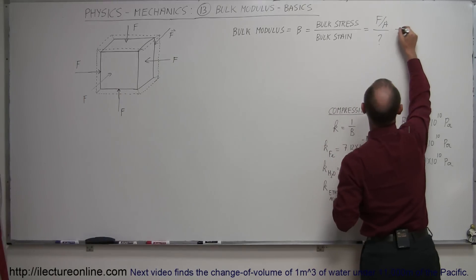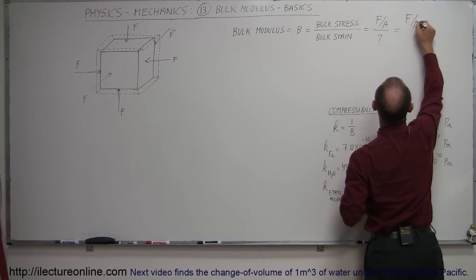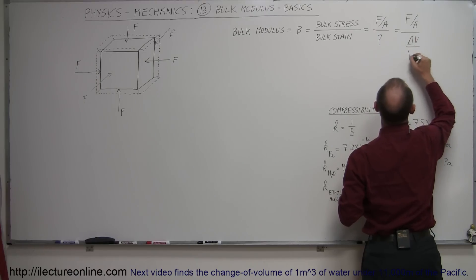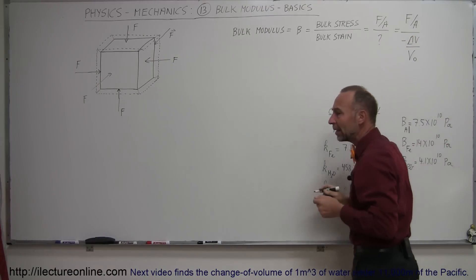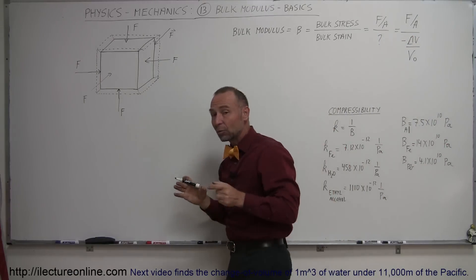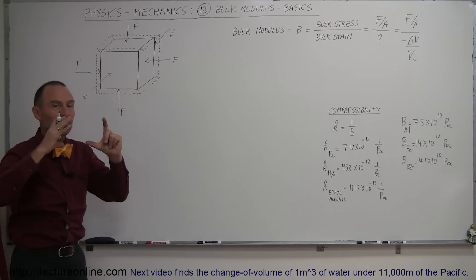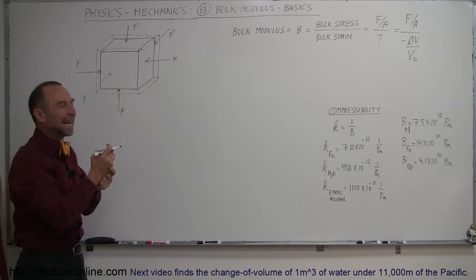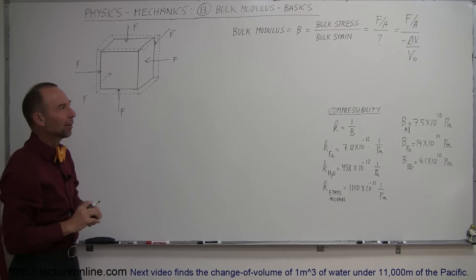So the bulk modulus can be defined as force divided by area, divided by the change in volume over the original volume. We place a negative sign on that because whenever we apply pressure to a material, the volume actually shrinks — it's a negative change — so the negative sign makes it easier to understand.